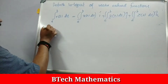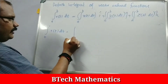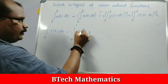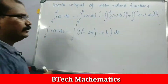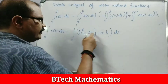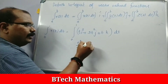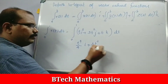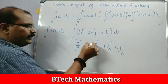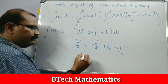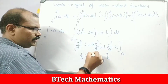For example, compute the integral from 0 to 1 of R of T dt, where R of T equals T cube i plus 3T square j plus T k. We integrate component-wise from 0 to 1. The result is 1/4 i plus 1 cube j plus 1/2 k. This is the integral answer vector.